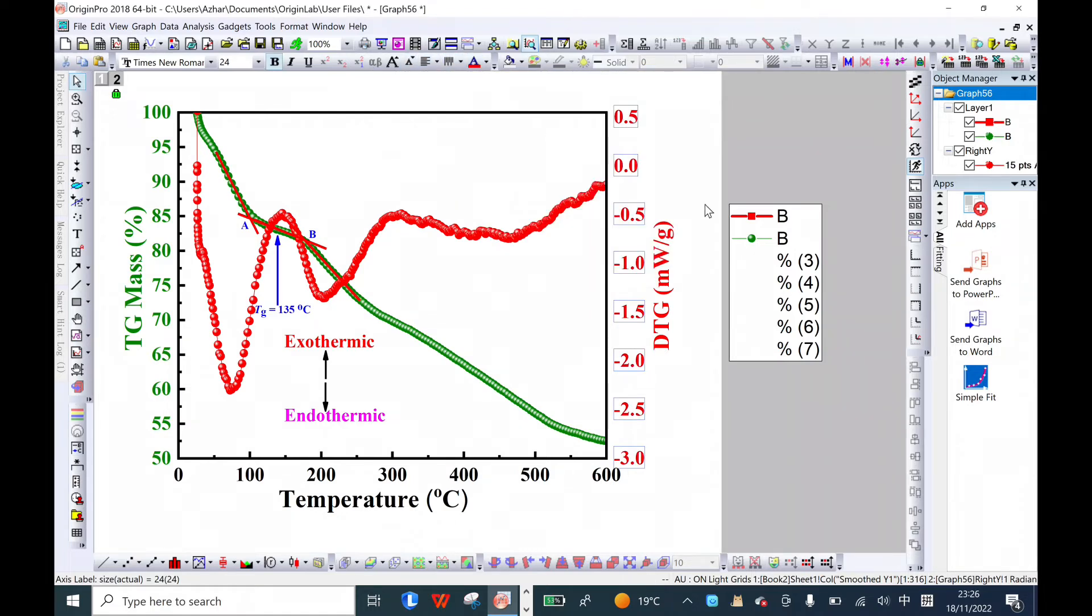For the determination of glass transition temperature, I will plot one curve line here, another line from here, this point to another one where there is a change in the slope. Now I will simply connect this middle line to the other two lines. You will see point A and point B are generated.